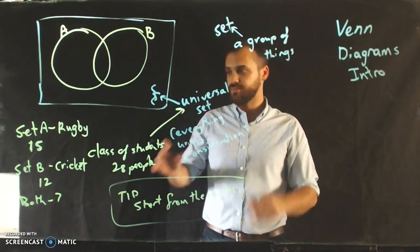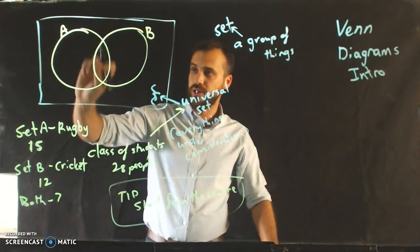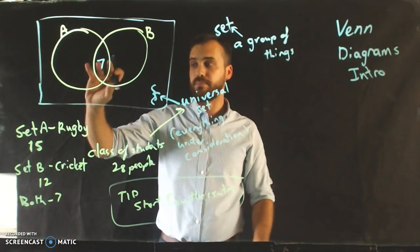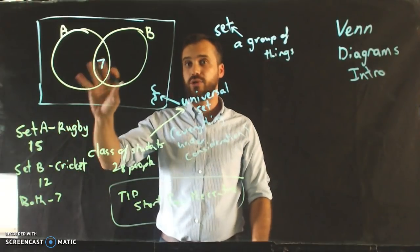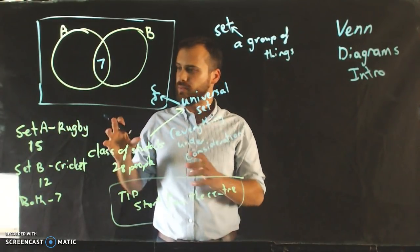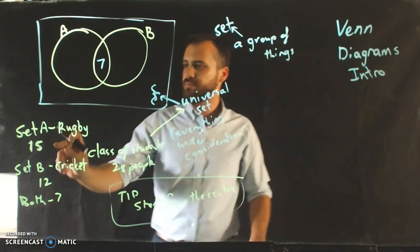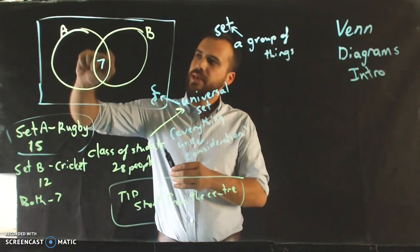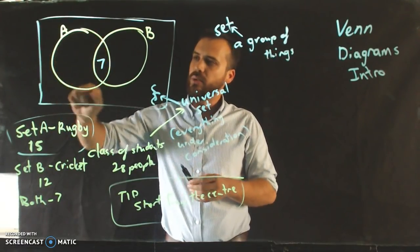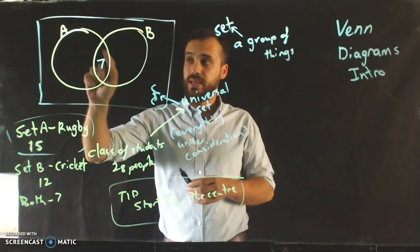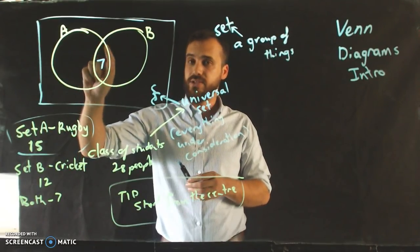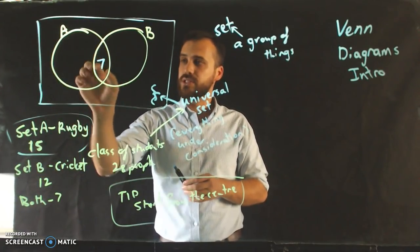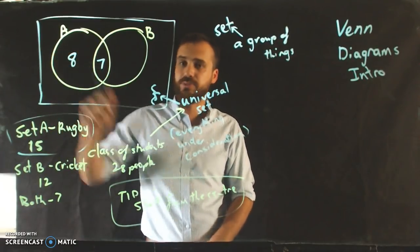So looking at this question, the centre of our Venn diagram is this bit here in the middle. Now, 7 people play both rugby and cricket. They belong to both set A and set B. Now, 15 people belong to set A. And this is why I'm saying start from the centre. 15 people belong in this circle. We've already accounted for 7 of them being in that small segment of that circle. So if 15 people belong in the big circle, 7 people are in there, then 8 must belong here.